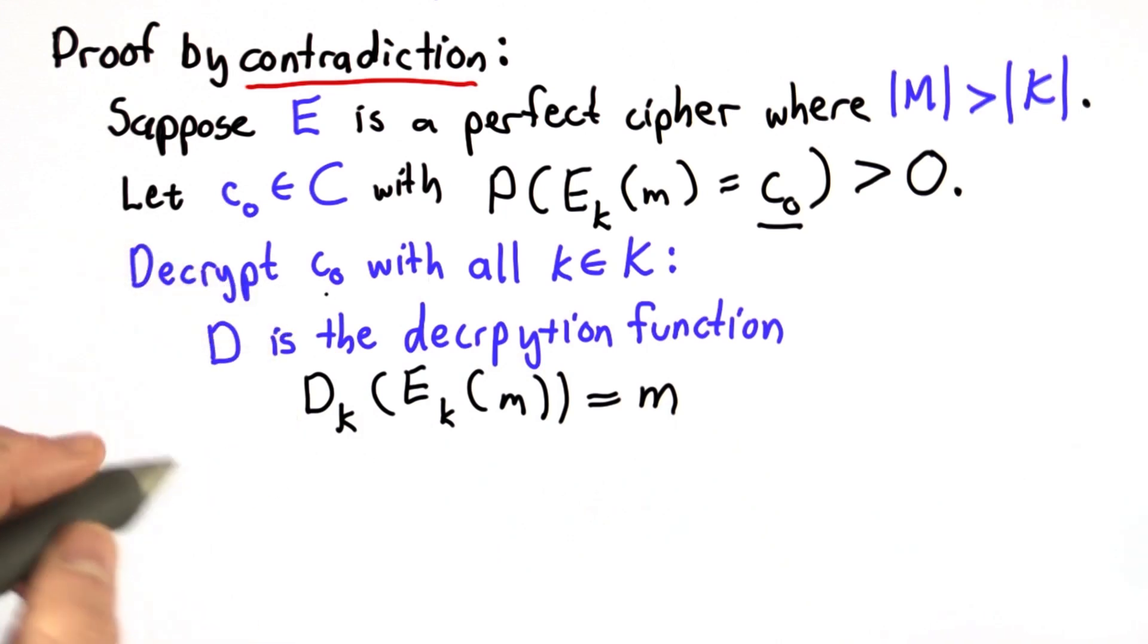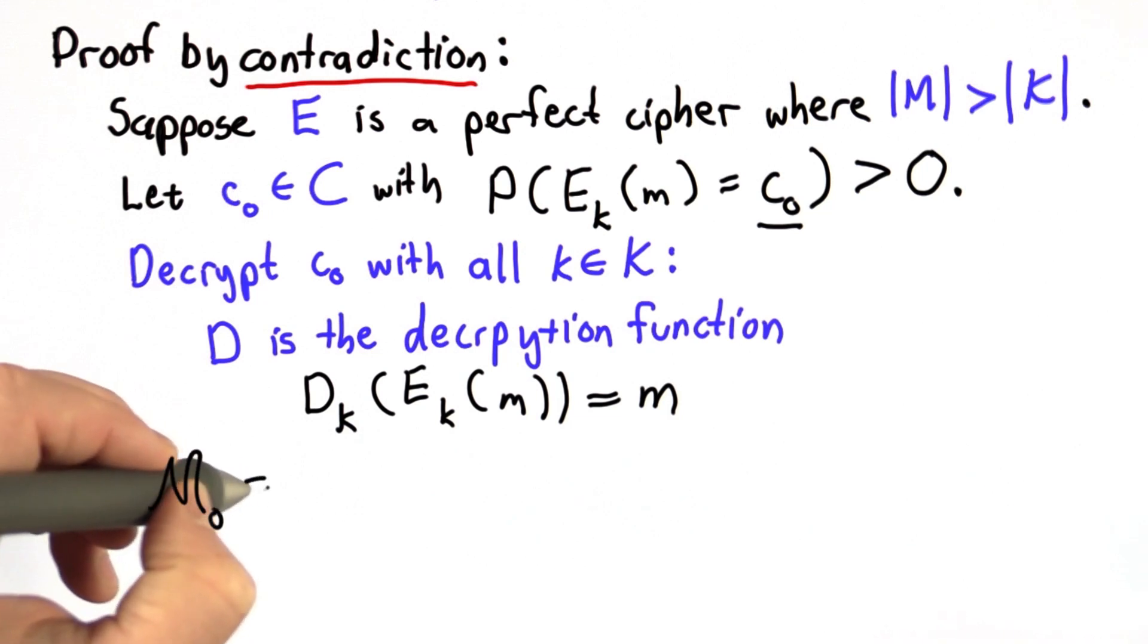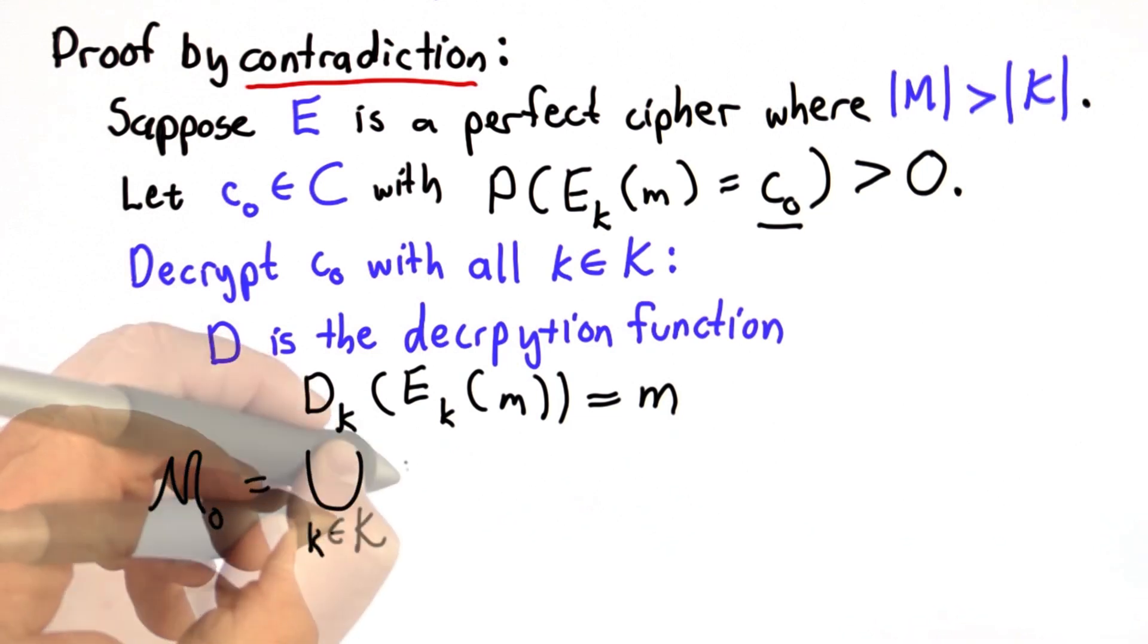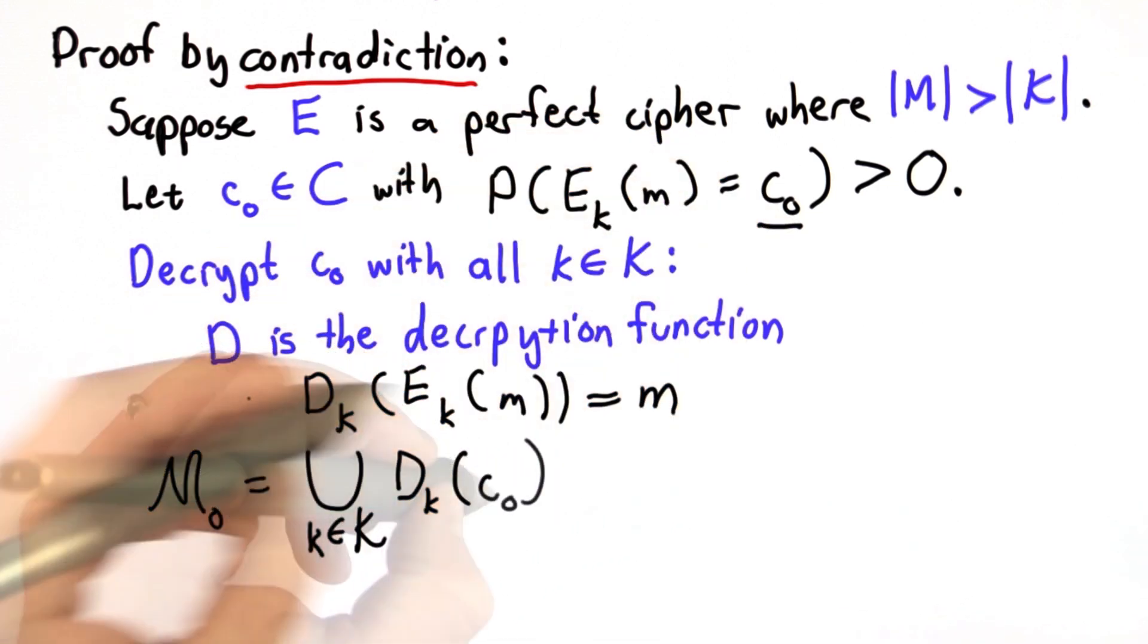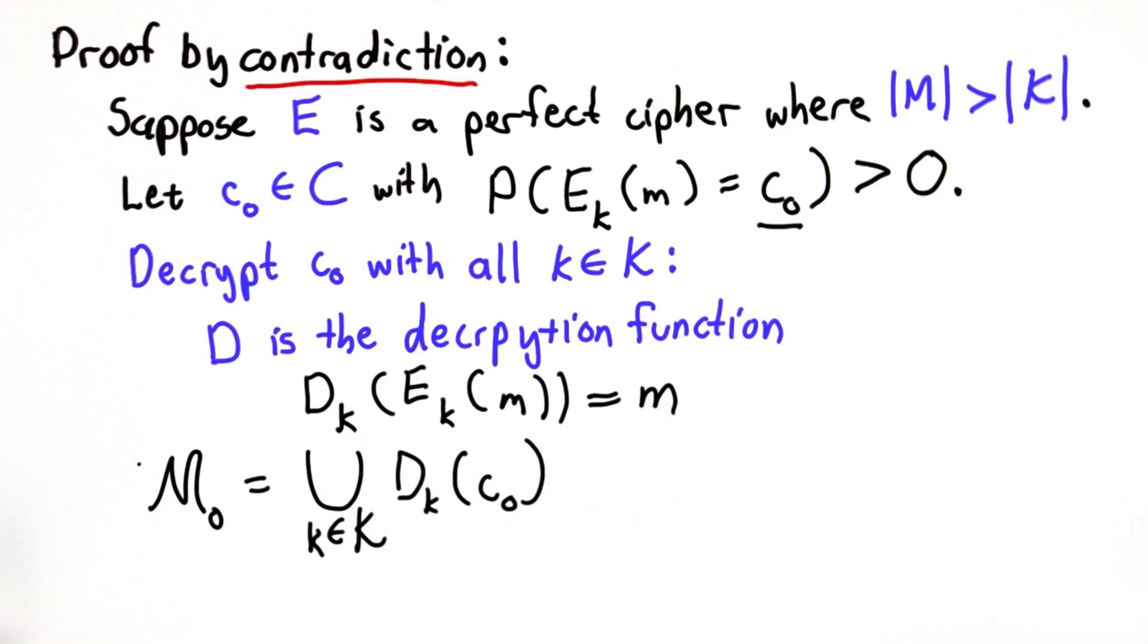So now what happens when we decrypt C0 with all possible keys? Well, we're going to look at the set of messages that we can produce. So we'll call M0 the set of messages that we get by unioning over all possible keys, the result of decrypting the ciphertext C0. So this models what an attacker would do. They've intercepted some ciphertext. They're trying all possible keys. This is what a brute force attacker would do. And looking at all the possible messages that can be produced.